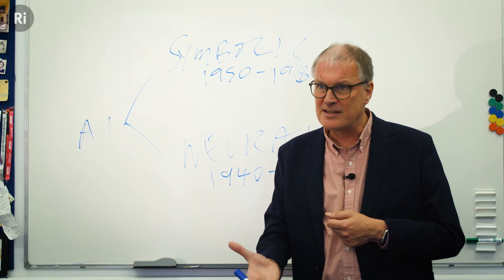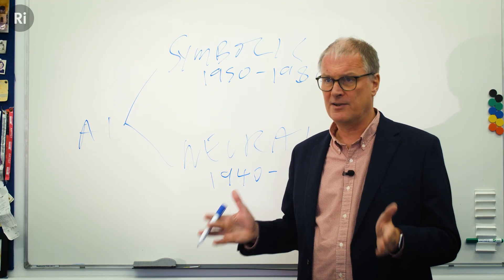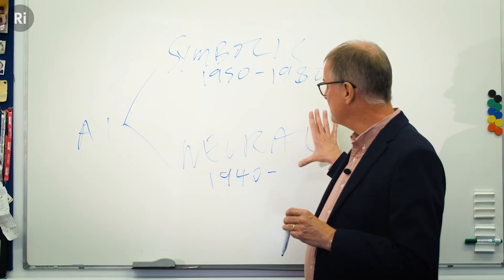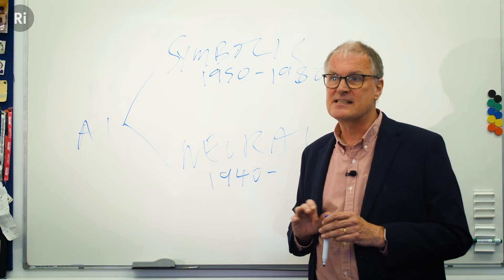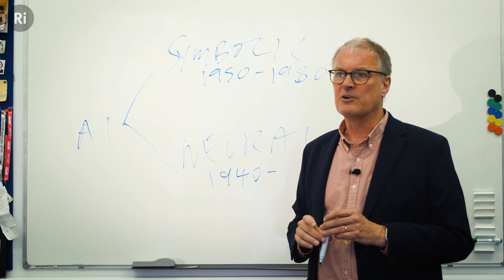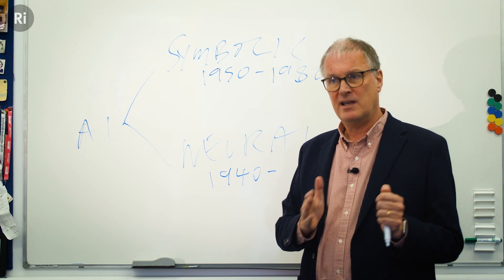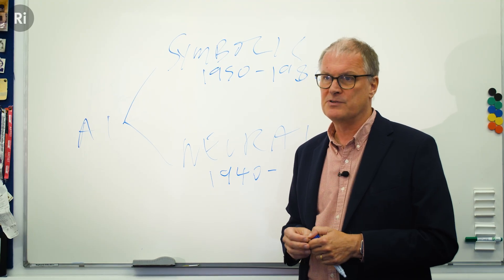Instead of telling it how it's going to do something, you show it through the training data what it is that you want it to do. This is the reason that AI this century has taken off, the success of neural networks. As well as the science underpinning neural networks to make it work, you need lots of data and lots of computer power.